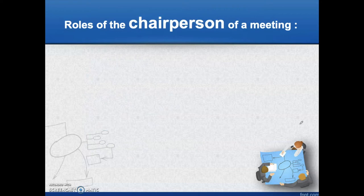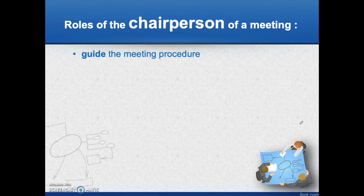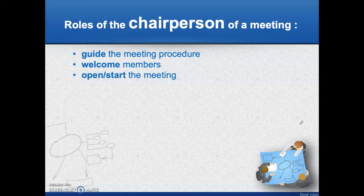As you all know, a meeting is chaired by a chairperson and there are certain roles that a chairperson must carry out. First is to guide the meeting procedure. Next, the chairperson is required to start the meeting by welcoming members and greeting them. Once this is done, the meeting can be started and the chairperson should set clear ground rules of what can be done and what is not allowed.